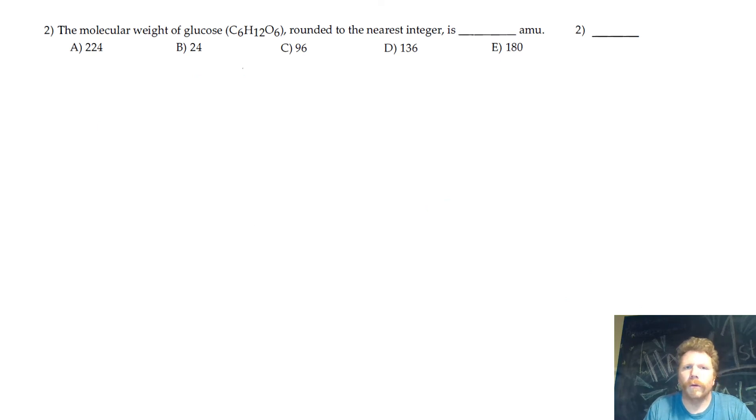Now question number two here, the molecular weight for glucose, C6H12O6. So this is a molecule that's made up of six carbons, 12 hydrogens, and six oxygens. One atom of carbon has a mass of 12, hydrogen has a mass of one, and oxygen has a mass of 16.